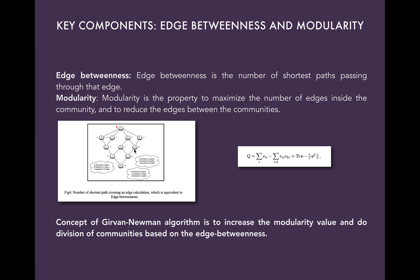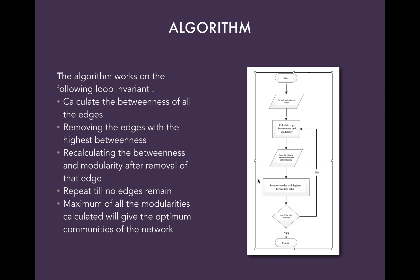We can see this concept in this image — how the shortest path crossing an edge is found, and this is the edge-betweenness. Modularity is calculated using the formula shown here. The concept of the Girvan-Newman algorithm is to increase the modularity value and do division of communities based on edge-betweenness. The algorithm works on the following loop invariant seen in this flowchart: first, calculate the betweenness of all edges; then remove the edge with the highest betweenness and recalculate betweenness and modularity after removal. Repeat until no edges remain. Maximizing all of these modularities calculated will give us the optimum communities of the network.